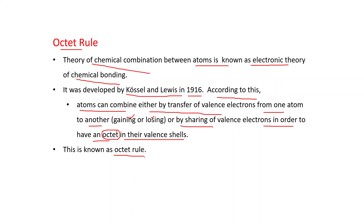The octet rule is based on the chemical inertness of noble gases. Noble gases are very less reactive because of the presence of eight electrons in their valency shells — that's why noble gases are stable. In the same way, elements which do not have eight electrons in their outermost shells try to achieve this octet either by gaining, losing, or sharing of electrons. This is the octet rule.